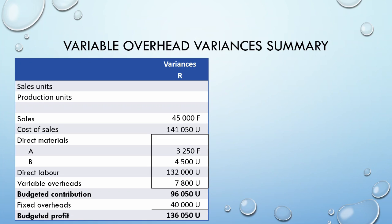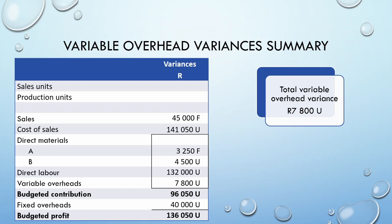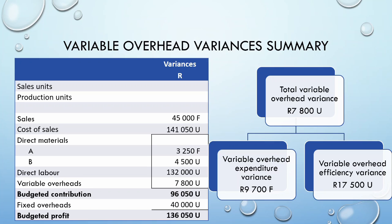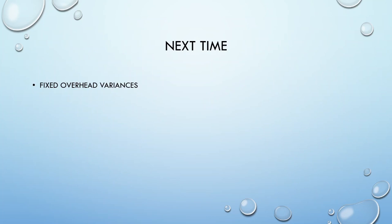Let's wrap up this video with a summary of our variable overhead variances. From our second video in the series, we know that our total variable overhead variance is 7,800 Rand unfavorable. Based on this video, we know it is made up of our expenditure variance of 9,700 Rand favorable and our efficiency variance of 17,500 Rand unfavorable. That brings us to the end of our video on variable overhead variances. In our next video, we will look at fixed overhead variances. See you next time.